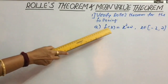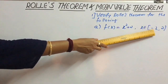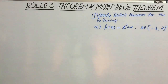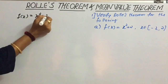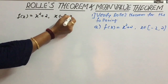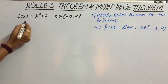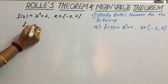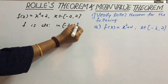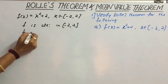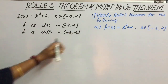Move on to the next question. f(x) = x² + 2, where x belongs to the closed interval [−2, 2]. Consider the function f(x) = x² + 2 on [−2, 2]. As f(x) = x² + 2 is a polynomial, f is continuous in the closed interval [−2, 2] and differentiable in the open interval (−2, 2).